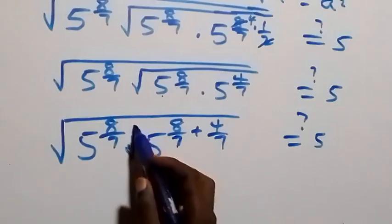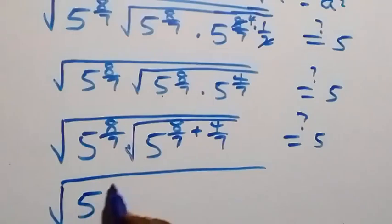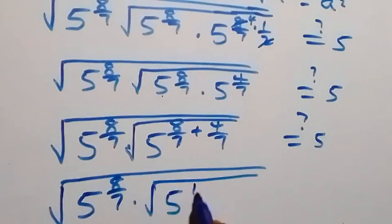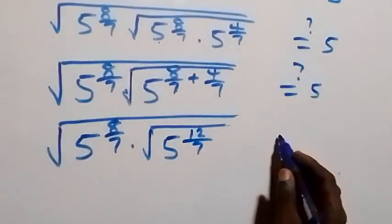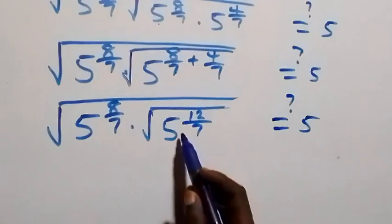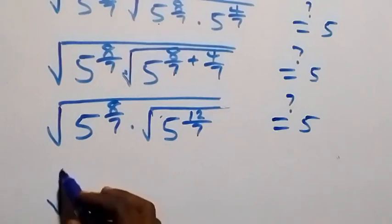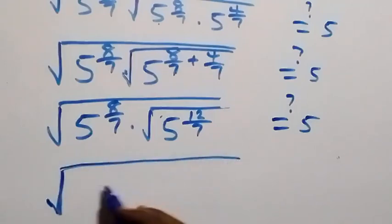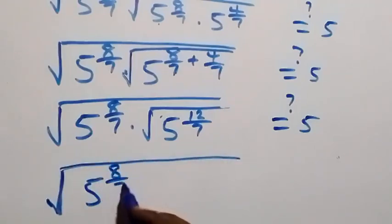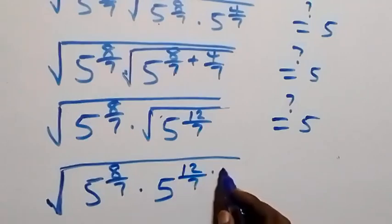Don't forget we have this square root here. So we have square root of 5 raised to power 8 over 7, then times square root of 5 raised to power 12 over 7. This equals 5. Also, let's change the outer square root to raised to power half — so we have square root of 5 raised to power 8 over 7, times 5 raised to power 12 over 7, raised to power half.